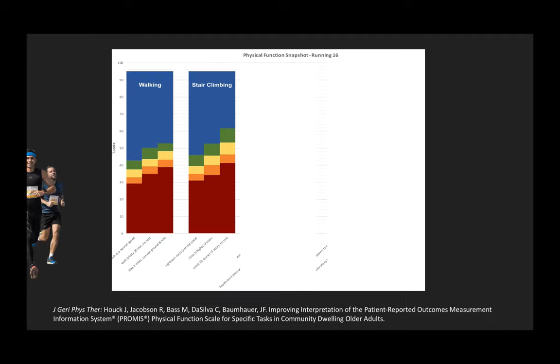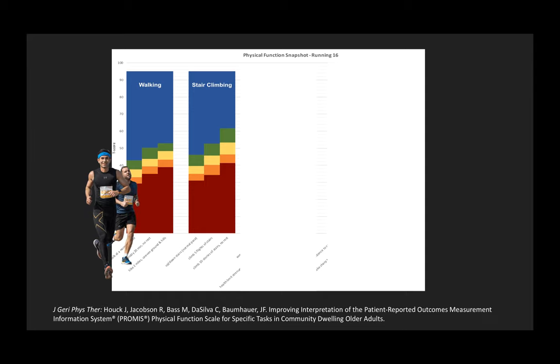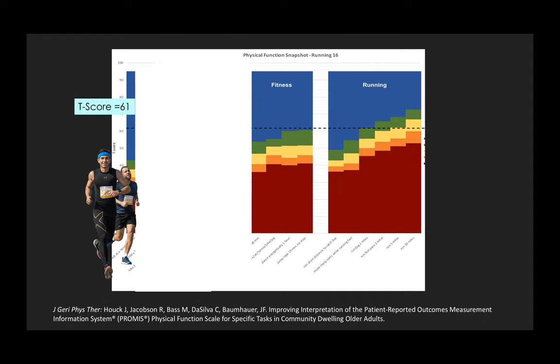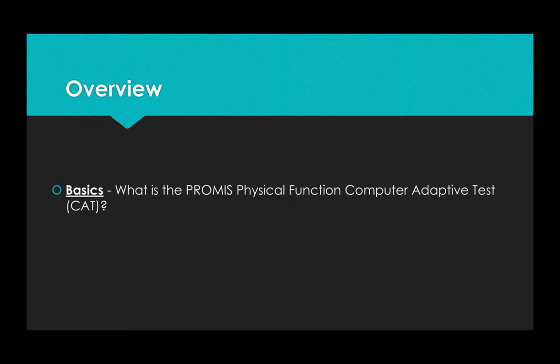We can also look at a higher score that might apply to an athlete. A person with a T-score of 61 perceives sit-to-stand and walking as not difficult. However, fitness and running items differentiate scores in this range. So that completes our review of basics of the PROMIS physical function measure. What we've done is review how an algorithm determines a T-score. And we've reviewed T-scores and what their floor and ceiling effects are.